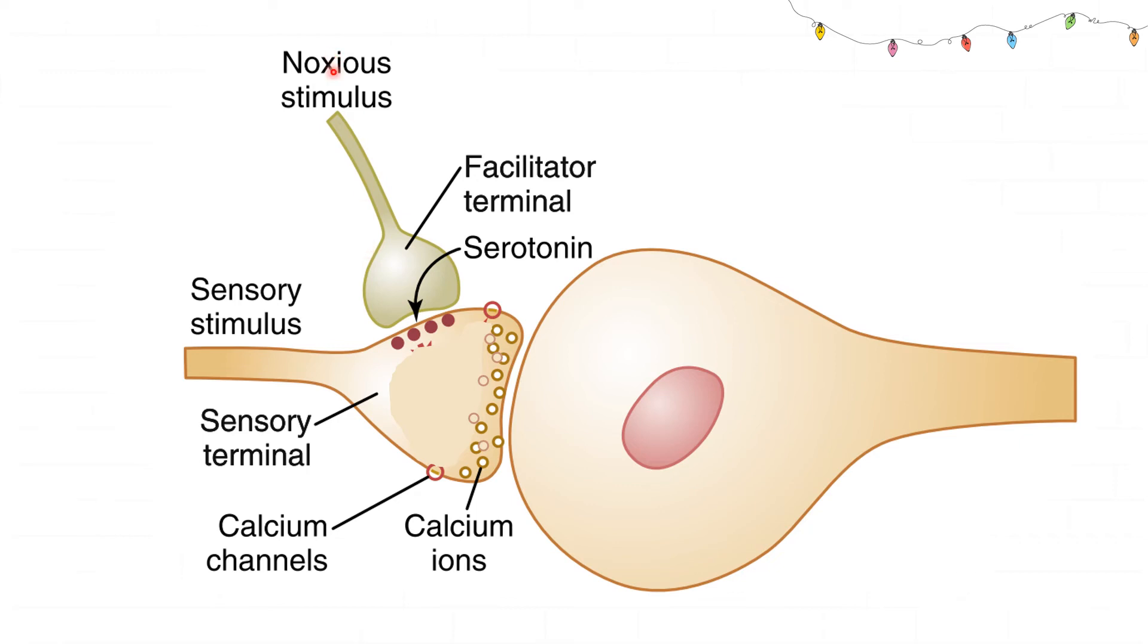In sensitization there will be this facilitator terminal which is influencing the presynaptic neuron. And what is the facilitator terminal doing? It will cause release of serotonin. So this serotonin will in turn cause an increase in the cyclic AMP, which will lead to an increase in the neurotransmitter release.